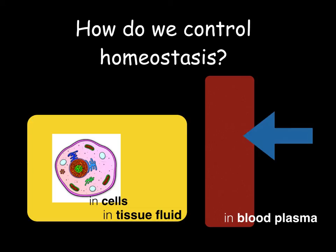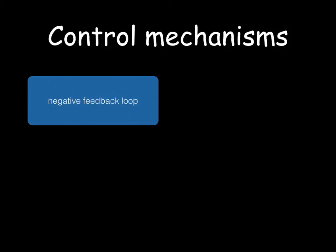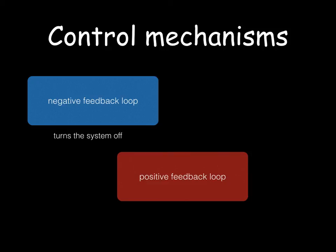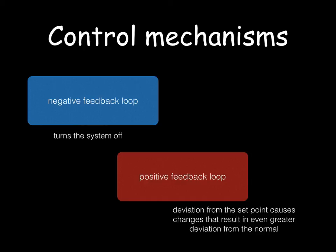How do we control homeostasis? If you control the composition of the blood, which controls the composition of the tissue fluid, you'll be able to control what's going on in the cell. There are different control mechanisms: a negative feedback loop, which turns the system off — most control mechanisms in living organisms use a negative feedback loop. Then there's a positive feedback loop, where any deviation from a set point causes changes resulting in even greater deviation. For example, this occurs in neurons with the sodium-potassium pump and also oxytocin during labour — an increase in oxytocin causes labour contractions, which causes a further increase in oxytocin, until the baby is born.